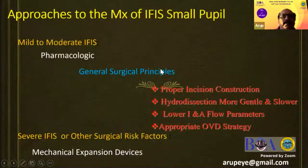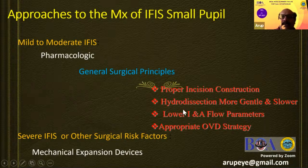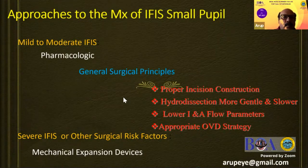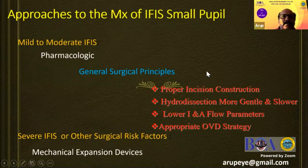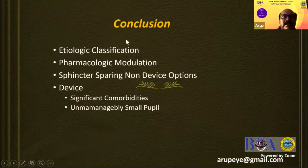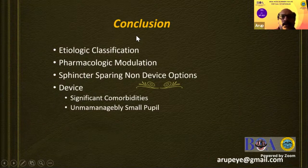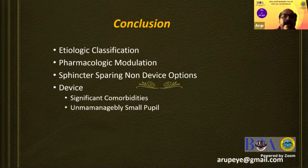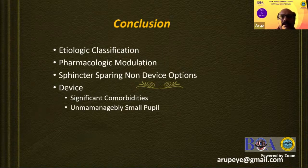Whenever dealing with an IFIS pupil, follow general surgical principles: properly construct the wound, perform hydrodissection slowly and gently, lower all irrigation-aspiration parameters, use an appropriate OVD strategy, and if the pupil is very small to start with, do not hesitate to use a mechanical expansion device. In conclusion: determine whether you are dealing with an IFIS candidate; pharmacologic modulation is extremely important; use non-device options first because post-operative cosmesis will be much better, especially with advanced technology IOLs; and resort to a device when there are significant comorbidities — hard cataract, shallow anterior chamber, questionable zonular status, or a very small pupil. Thank you.